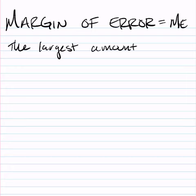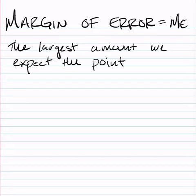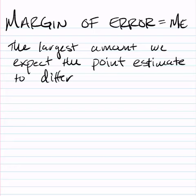Remember that a point estimate is going to be that statistic, and we've talked about x bar and p hat. Those are the point estimates we'll use in this chapter, and the parameters that we're going to be estimating is going to be mu and p respectively.